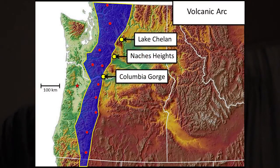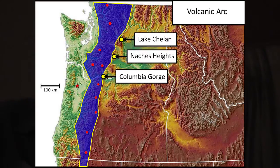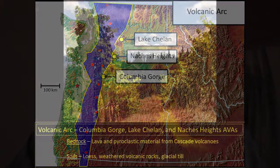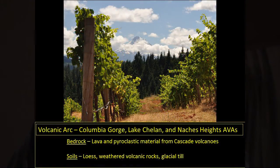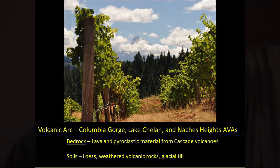Moving to the volcanic arc — because it's relatively high elevation, we don't grow a lot of grapes there. It's generally climatically inhospitable, and the lavas and pyroclastic rocks don't travel very far from the source in most cases. There are a few AVAs — Lake Chelan, Naches Heights, and Columbia Gorge — that have some input from the modern Cascade volcanoes, but in general those big volcanoes don't supply a lot of material to our vineyards.